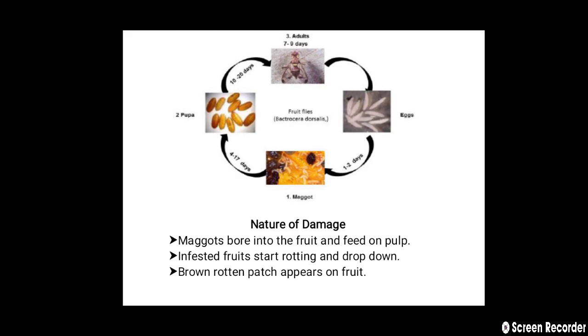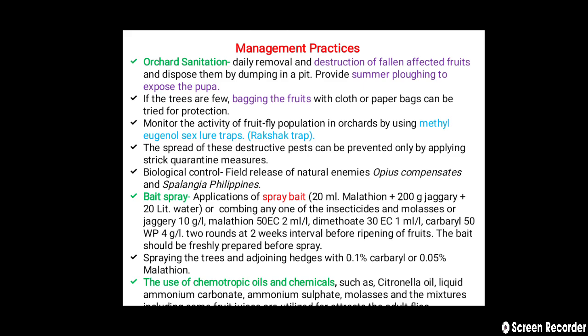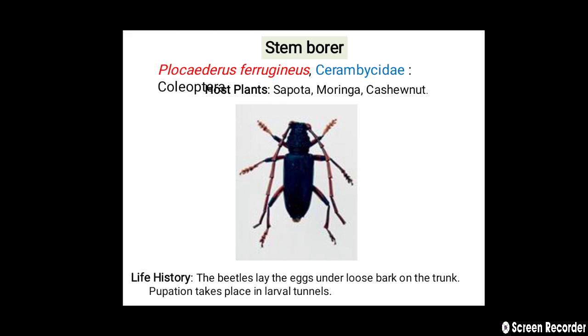The nature of damage: maggots bore into the fruit and feed on the pulp. Infested fruits start rotting and drop down, and brown rotten patches appear on the fruits. Management practices include orchard sanitation — daily removal and destruction of fallen and affected fruits. If trees are few, follow bagging of fruits. Monitor fruit fly population using methyl eugenol traps. In biological control, natural enemies such as Opius compensators and Spalangia philippines can be used. Spray trees and adjoining hedges with 0.1% carbaryl or 0.05% malathion.